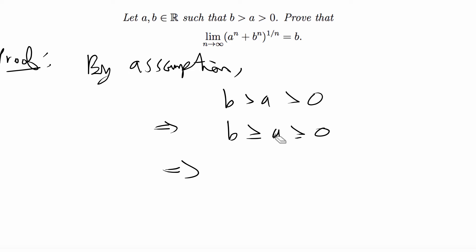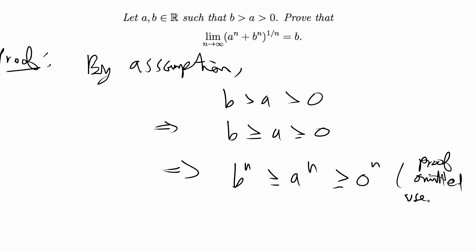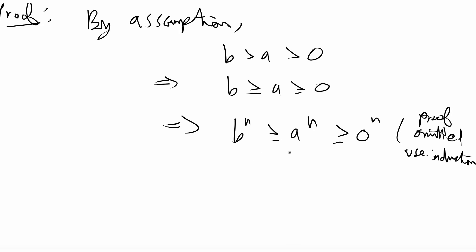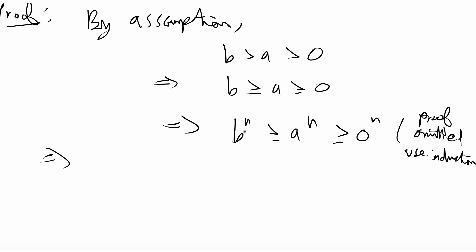Next, we need a^n instead of just a, so I'm going to raise all terms to the nth power: b^n ≥ a^n ≥ 0. I checked my notes and answer key — I didn't prove this step for my homework, but you could easily prove it using induction. Proof omitted — use induction. The base case is true when n = 1 by assumption, and the inductive step would show b^(n+1) ≥ a^(n+1) ≥ 0.